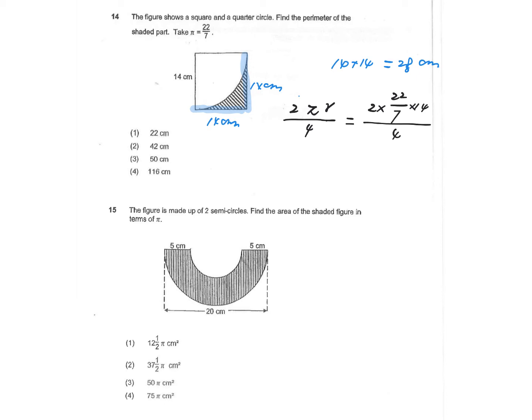So now let's do some cancellation. 14 cancelled by 7, so we have 2 left. And then 2 multiplied by 2 would be cancelled by 4 again. So the final answer in this case is going to be 22 centimeters.